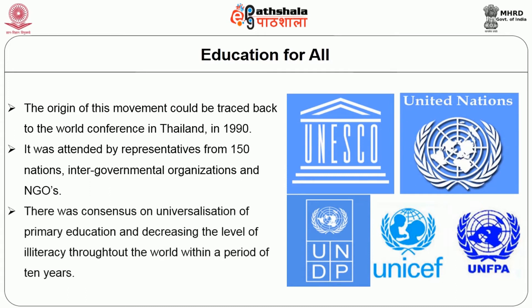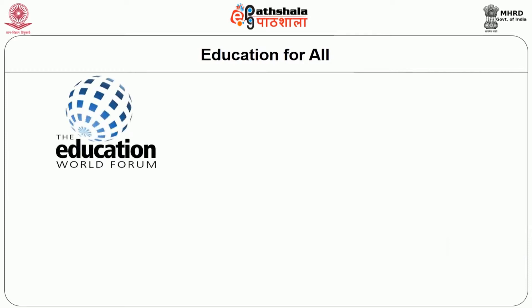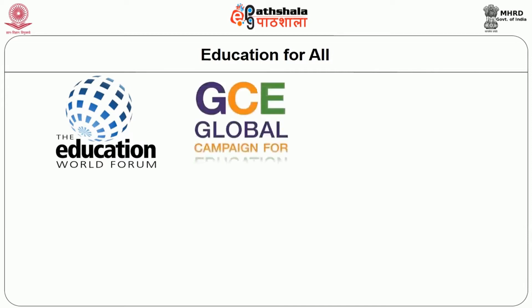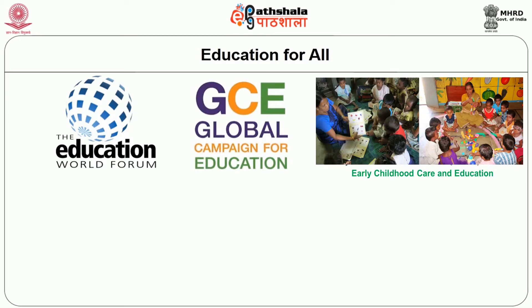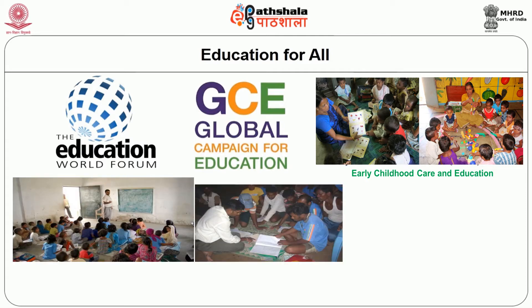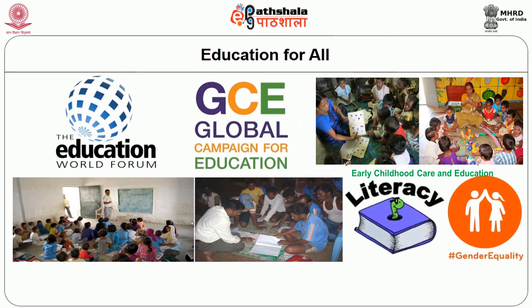There was a consensus on universalization of primary education and decreasing the level of illiteracy throughout the world within a period of 10 years. At the World Education Forum in 2000, the international community defined the Global Education for All agenda as relating to six areas: Early Childhood Care and Education, Primary Education, Youth and Adult Learning Needs, Literacy, Gender Equality, and Quality in Education.